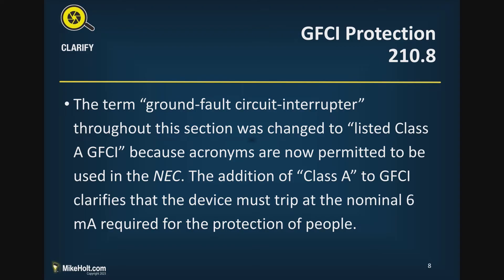We were just talking about acronyms, but look what it says: the term 'ground fault circuit interrupter' throughout the section was changed to 'a listed class A GFCI' because acronyms are now permitted to be used in the code. The addition of 'class A' to GFCI clarifies the device must trip at the nominal six milliampere or larger for the protection of people.